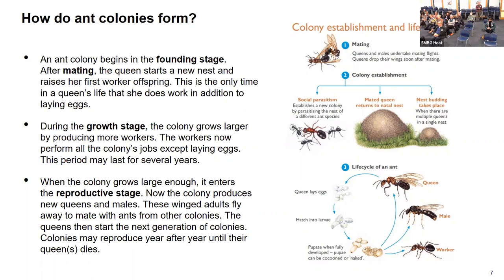There's another third category called social parasitism, where a new colony would be formed by parasitizing the nest of a different ant species. It's hard to understand how a mated queen would suddenly parasitize a whole new colony — maybe she goes and kills the queen and replaces her.